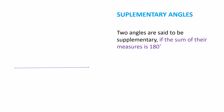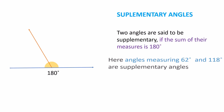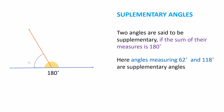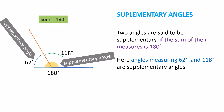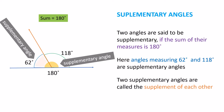Supplementary Angles: Two angles are said to be supplementary if the sum of their measures is 180 degrees. Here, angles measuring 62 degrees and 118 degrees are supplementary angles, as their sum equals 180 degrees. Two supplementary angles are called the supplement of each other.